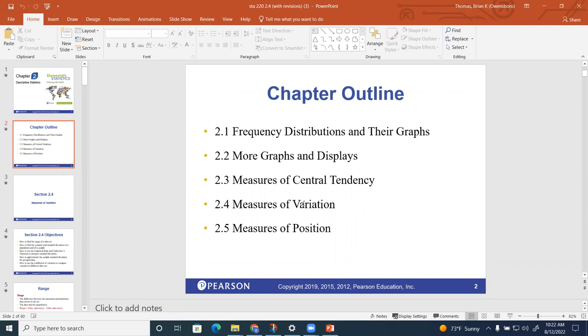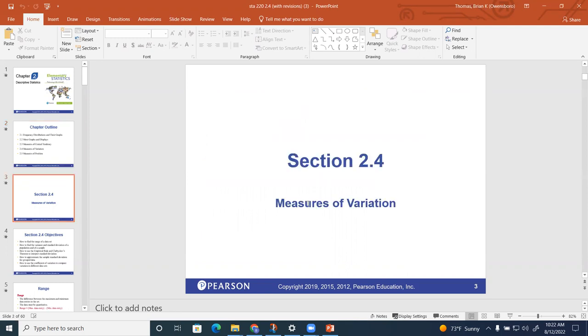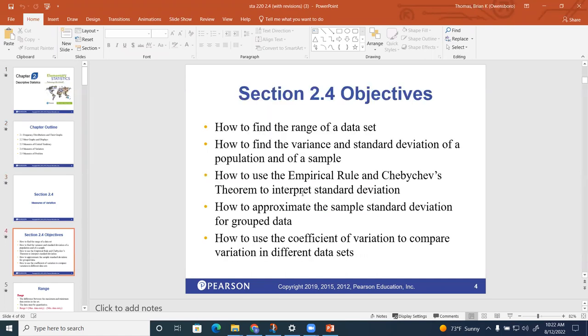In statistics, it basically refers to how the data spreads out. So we're going to get into measures of variation. One of the first ways to measure spread is what we call range. What I'm going to spend a little bit of time on in this video is variance and standard deviation of a population and of a sample.